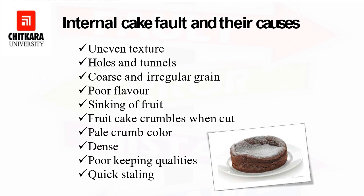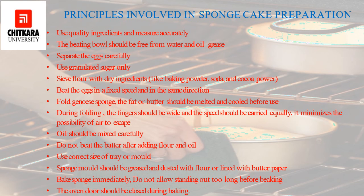Principles of sponge cake preparation: use good quality ingredients and measure accurately. The beating bowl should be free from water, oil, and grease. Separate eggs carefully and use granulated sugar only. Sift flour with dry ingredients like baking powder, soda, and cocoa powder. Beat eggs at a fixed speed and in the same direction.